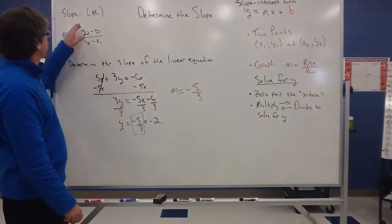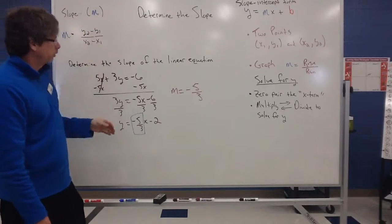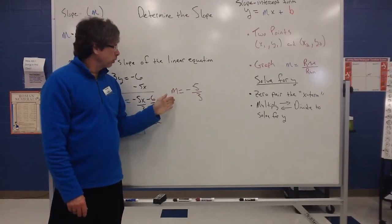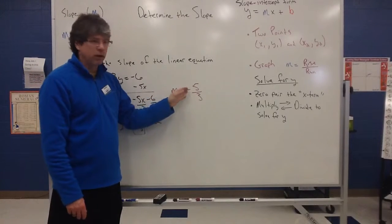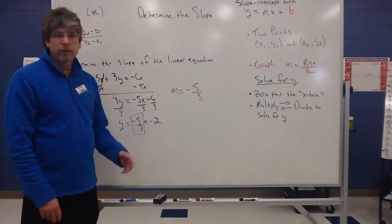Because remember, m in algebra a lot of times is going to be associated with slope. So you'll see that notation a lot of times where this kind of means slope is equal to a negative 5 thirds. And we've achieved our goal. We've found our slope.